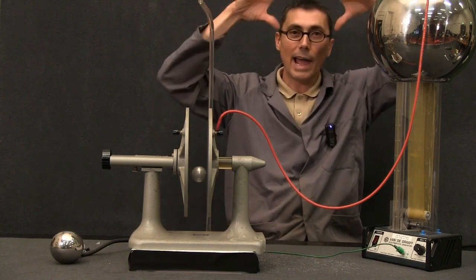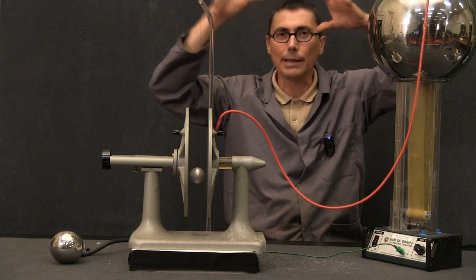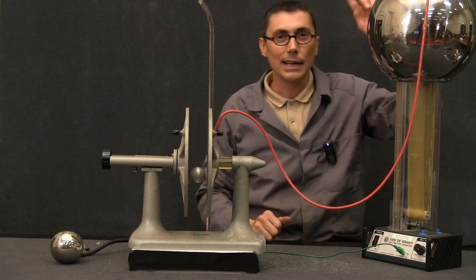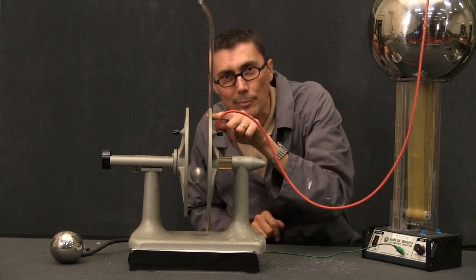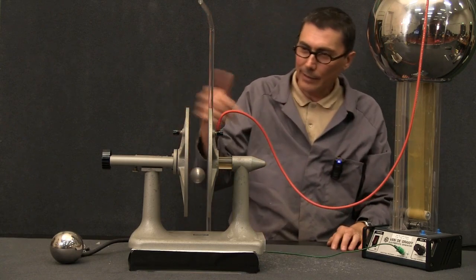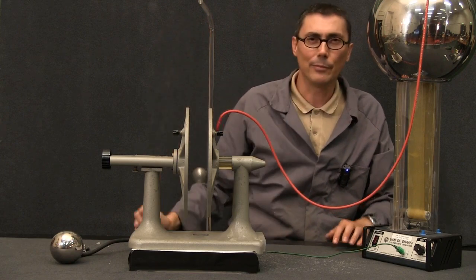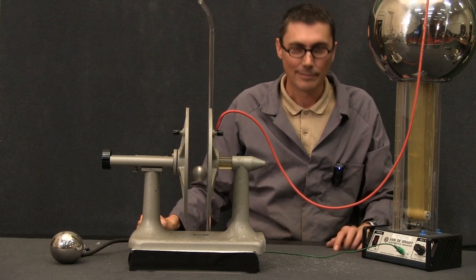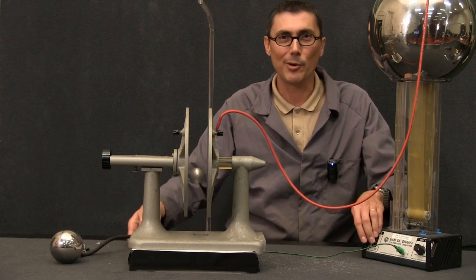So whenever a highly charged cloud, a potential source of lightning, would pass overhead, it would build up a charge in one of the bells and the little clanger would start ringing the alarm. I think I'll play some more pong.